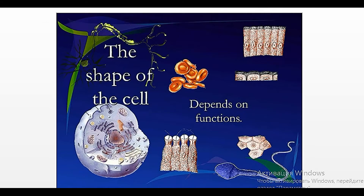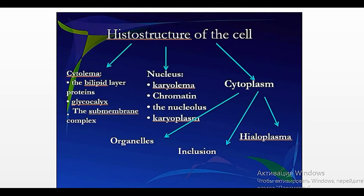Cells have different shapes, different sizes, and different extra components. Some types of cells can be divided into head, neck, and tail. Looking at the main components of the cell — the histo-structure of the cell — there are three main components: the cytolema, the nucleus, and the cytoplasm. Each of these three components has a compound structure, meaning each one — cytolema, nucleus, or cytoplasm — is composed of other components and subdivisions.